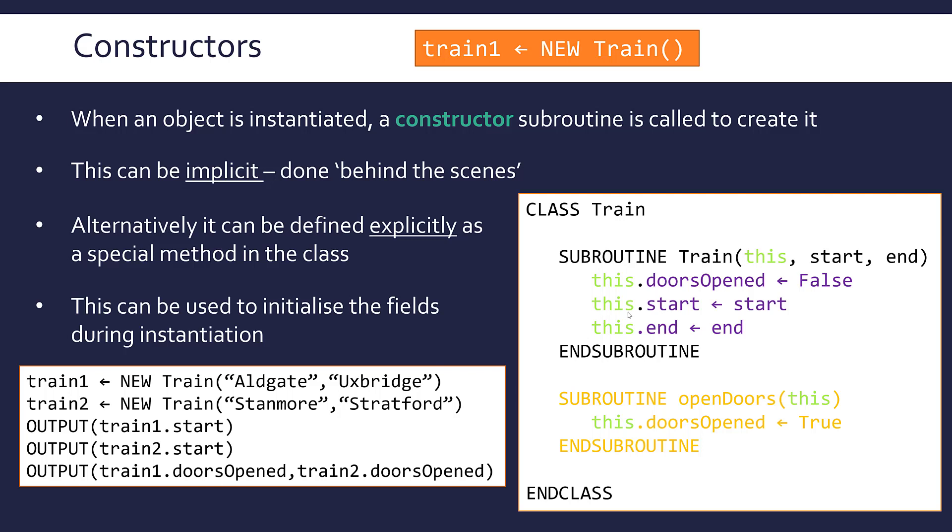That's where the reasoning behind 'this' maybe starts to become clear. In this bit of code, I've got two examples of start, two examples of end, currently active. One pair belongs to train1, one pair belongs to train2. 'This' enables you to pinpoint which one exactly you're referring to. Just to see what this is doing, if I output train1.start, I should get Aldgate. If I output train2.start, I get Stanmore because 'this' is telling it which one it actually is.